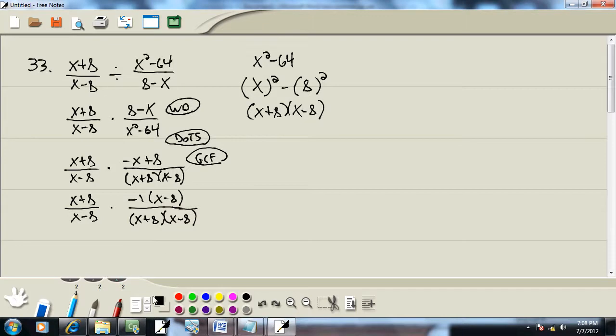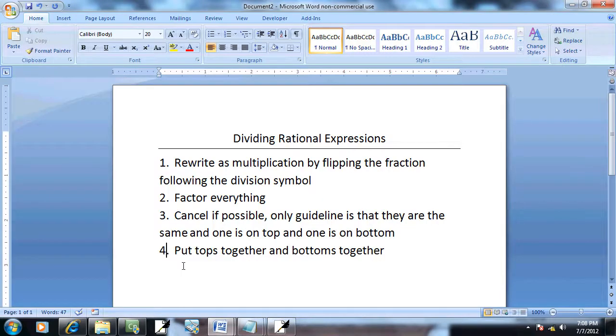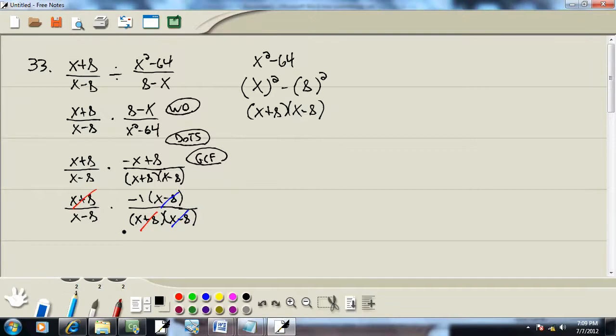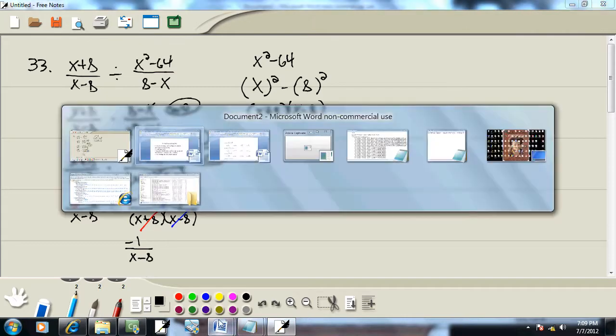Step 3, cancel. Well, only guideline is one's on top, one's on the bottom. Here's an x plus 8 and here's an x plus 8, those can cancel. Here's an x minus 8, here's an x minus 8, here's an x minus 8. Now nothing else will cancel. It says put tops together, bottoms together. Well, this one's still pretty basic. So we got negative 1 over x minus 8, and that's our answer.